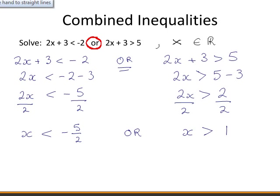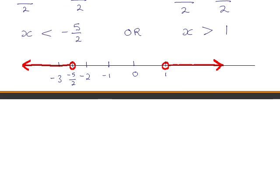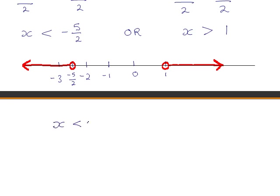Representing this on the number line: because the word OR is used, we want the union of these two solution sets. So we have x is greater than 1 or x is less than −5/2. We write this as x less than −5/2, and to represent OR we use the union symbol, then x is greater than 1.